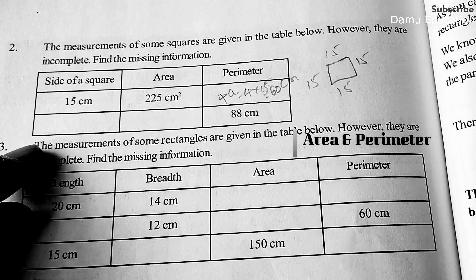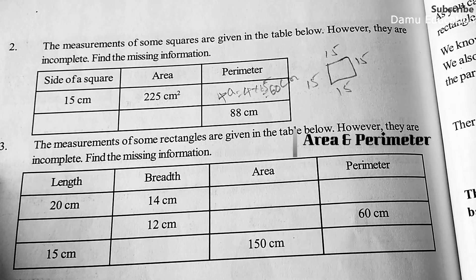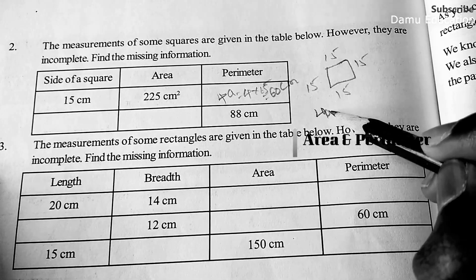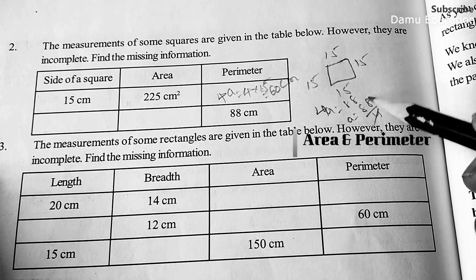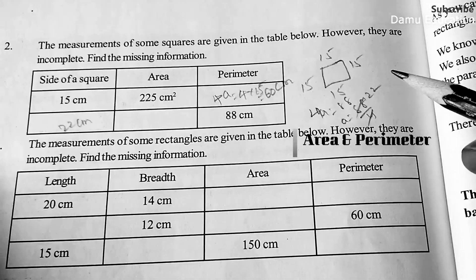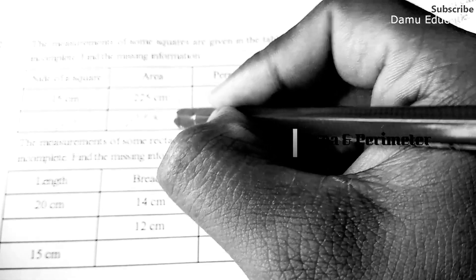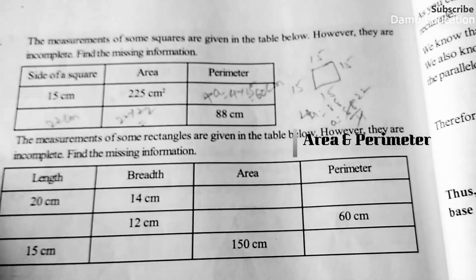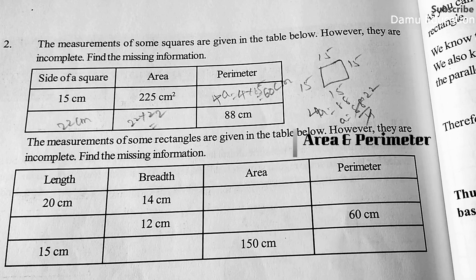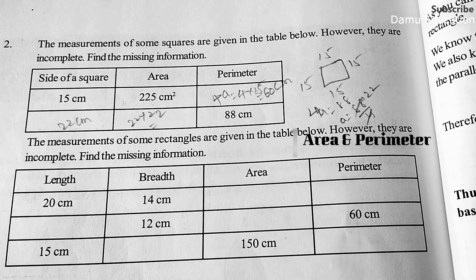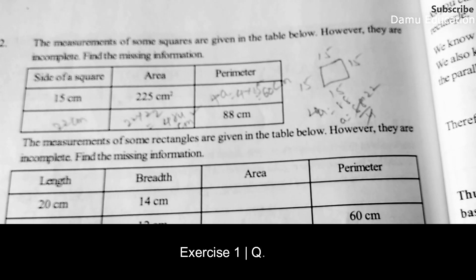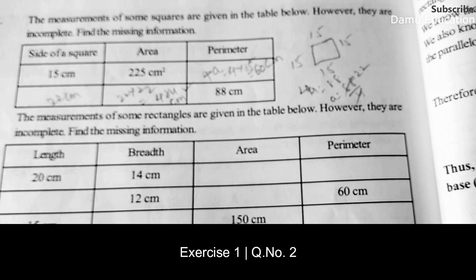Next, the perimeter is given and we have to find the side and area. Perimeter is 4a, so 88 equals 4a, meaning a equals 88 divided by 4, which is 22. So the side is 22 meters. The area is a into a, that is 22 into 22, which equals 484 centimeters squared.